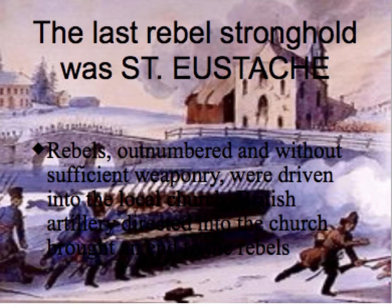The last rebel stronghold was at St. Eustache. By this point, winter had already set in, and while there were other battles at other churches and locations throughout the St. Lawrence River area, St. Eustache was the last major engagement in the rebellion of 1837. While the rebels were outnumbered with insufficient weaponry, they were able to hold themselves up in the church. Eventually, the British — as had happened in Upper Canada at Montgomery's Tavern — burnt down the church and fired upon the rebels as they were fleeing the burning building.